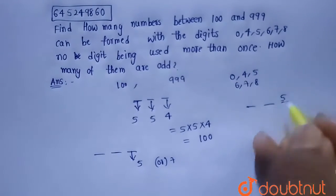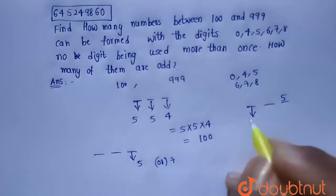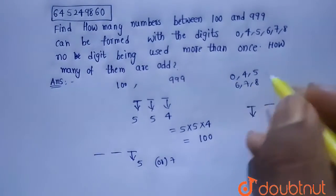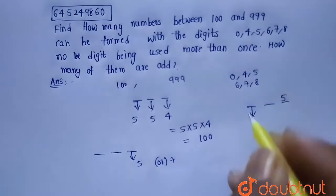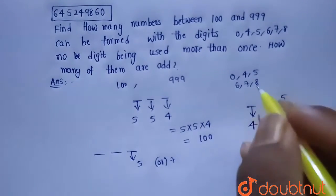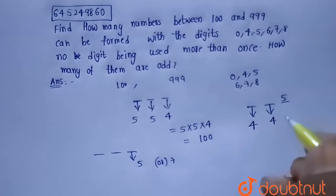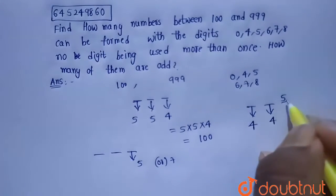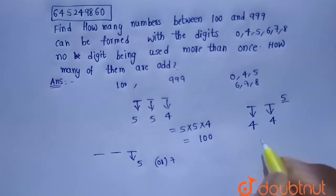So if there is a 5, then the first place will have four chances because it cannot take 0, it cannot take 5, it can take the remaining 4 numbers. And coming to the second place, it will have four chances because it cannot take the number 5 and the number which is present in the first place. So total are 4 × 4, that is nothing but 16.